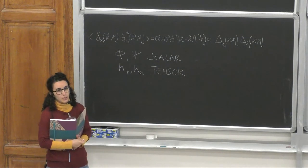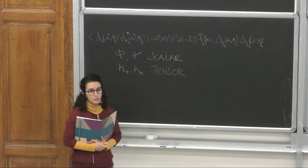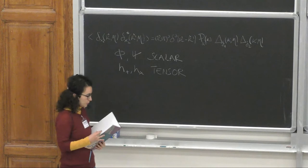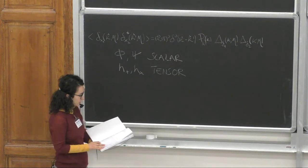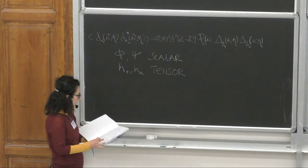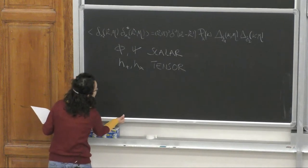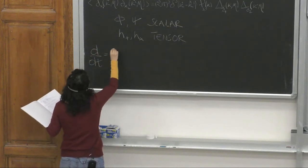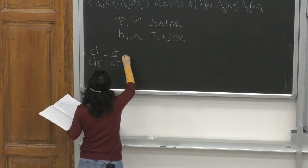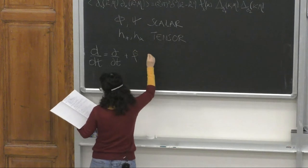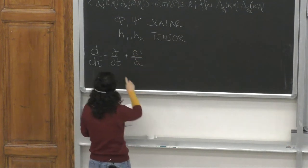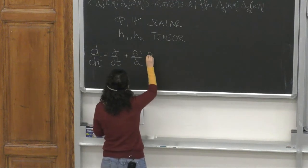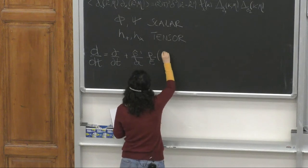Once we have the perturbation to the metric, we can derive the expression of the Liouville operator for the left-hand side of the Boltzmann equation. This is what we did at the end of yesterday: we derived the expression of the perturbed Liouville operator in case of scalar perturbations. In the simple case of a homogeneous and isotropic universe, we only have the derivative with respect to time and the derivative with respect to the magnitude of the momentum, because there is no dependency on other variables.